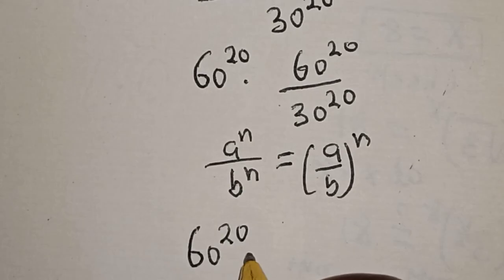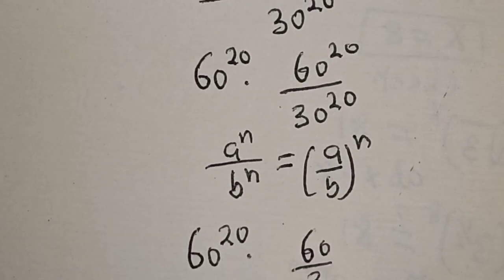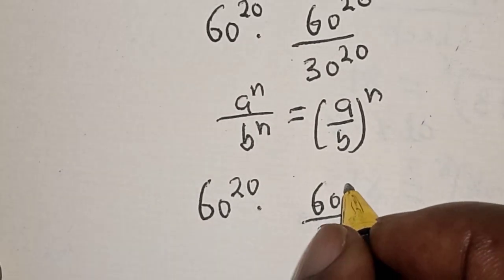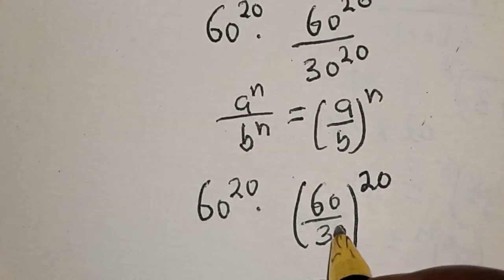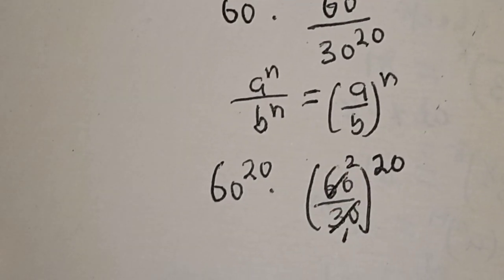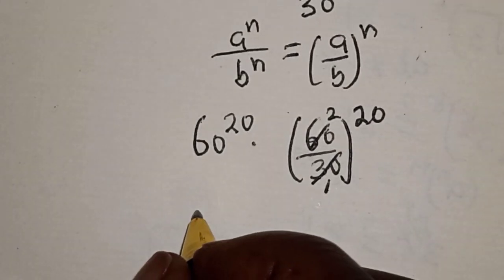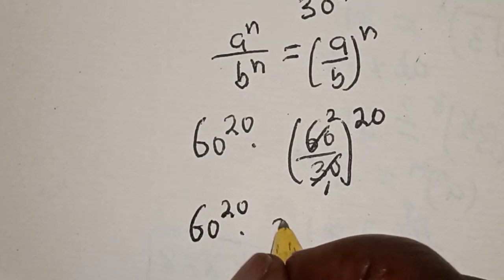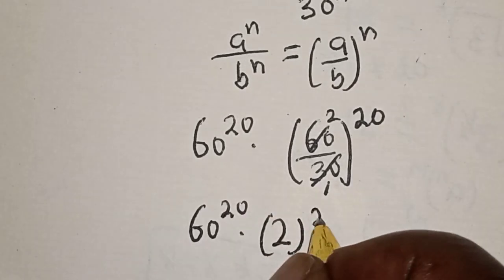So we have 60 raised to power 20 multiplied by 60 over 30, raised to power 20. Simplifying 60 over 30 gives us 2, so this becomes 60 raised to power 20 multiplied by 2 raised to power 20.